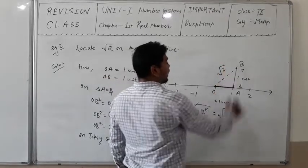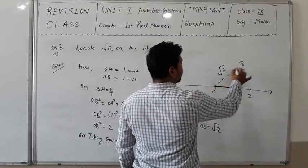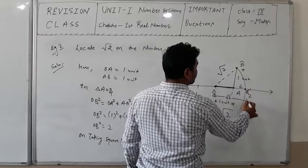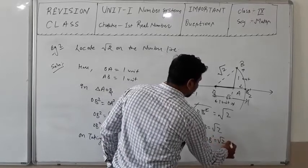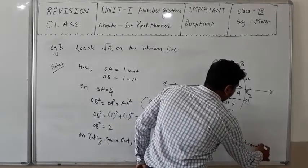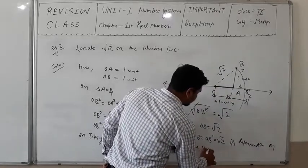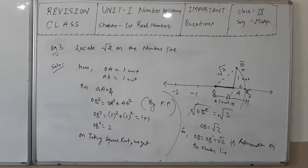OB = OB dash = √2 is the representation on the number line. That is the representation of √2 on the number line. Similar questions include representation of √3 and √5 on the number line. I am taking some more questions.